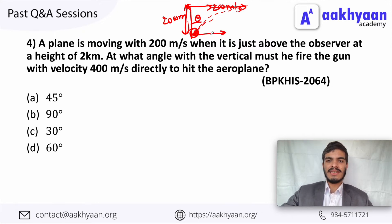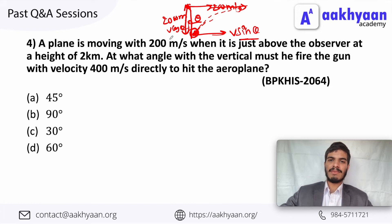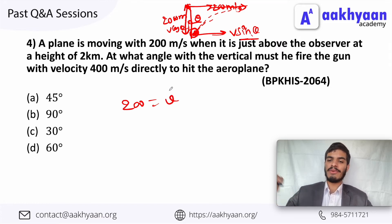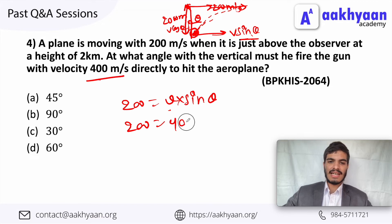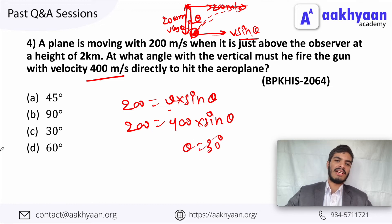The bullet has vertical component v cos theta and horizontal component v sin theta. For the bullet to hit the plane, the horizontal component of the bullet must equal the plane's speed. So v sin theta equals the plane's velocity. Solving, 2c equals v sin theta gives 4c sin theta, so theta equals 40 degrees. This is the correct option.